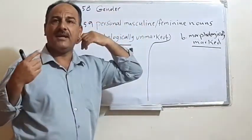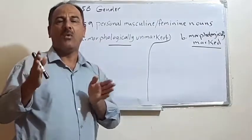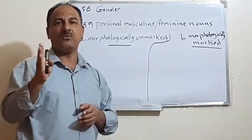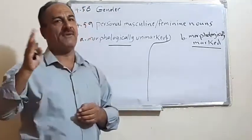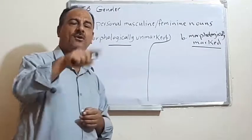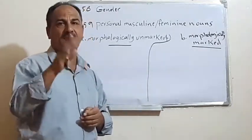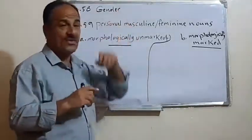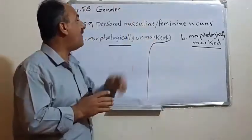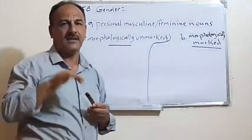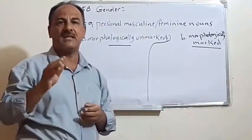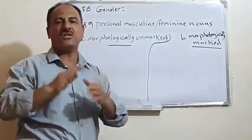In inflected languages, we recognize whether a noun is feminine or masculine from the shape of the word. For example, in Arabic we have 'fellah' and 'fellaha', 'amil' and 'amila'. But in English, we don't have such distinction — we have 'worker', and worker could be he or she. We have 'farmer', and a farmer could be he or she.